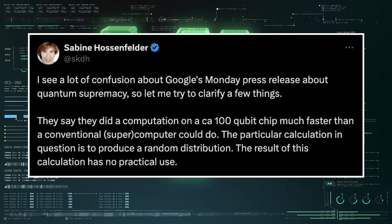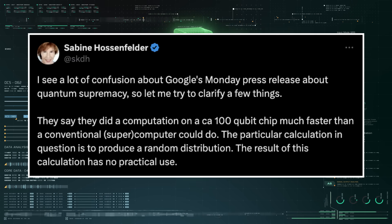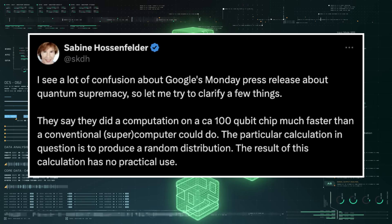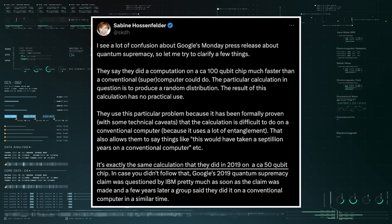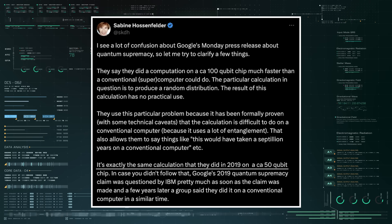German physicist Sabine Hossenfelder tweeted in response to Google's announcement: The result of this calculation has no practical use. It's exactly the same calculation that they did in 2019 on a circa 50 qubit chip.